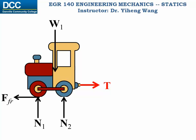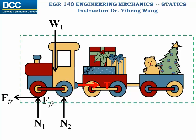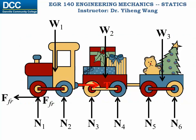However, if you choose the entire train as your system, then you not only need to add the forces acting on the new parts — the new weights and the new normal forces — but more importantly, you need to exclude force T, since it is now considered an internal force within the system and therefore should not appear on the free body diagram.